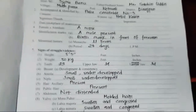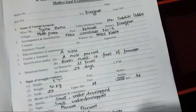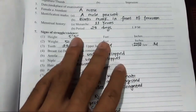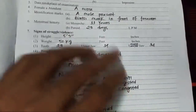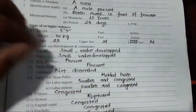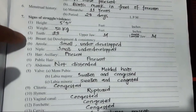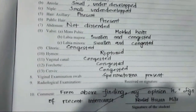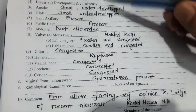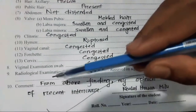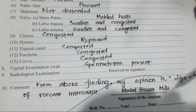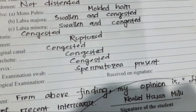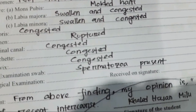This is the rape case examination section covering recent sexual intercourse. It includes genital findings such as the breast area, nipple, hair, pubic hair, abdomen, vulva, clitoris, and hymen. The most important part is the opinion: the sign of recent intercourse.